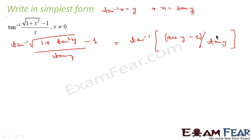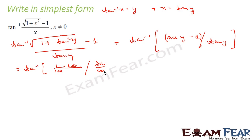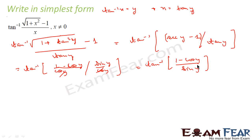Now let's put everything in terms of sine and cosine because sec is difficult. So we write sec as 1 by cos. This gives tan inverse of (1 by cos y minus 1) divided by (sin y by cos y), which is tan inverse of (1 minus cos y) by cos y, divided by sin y by cos y. The cos y cancels, so this becomes tan inverse of (1 minus cos y) by sin y. Now we need to convert this into the form of tan theta, because tan inverse of tan theta is what we can simplify.